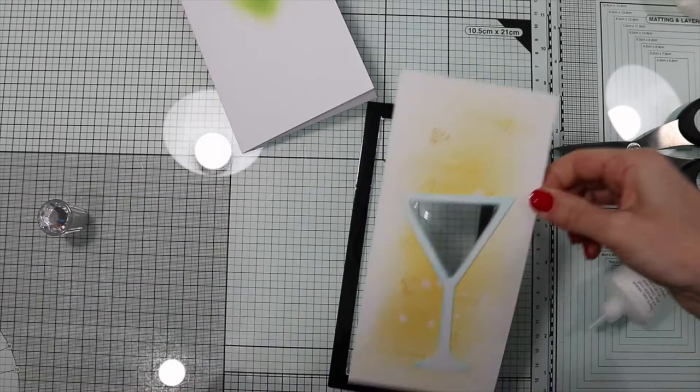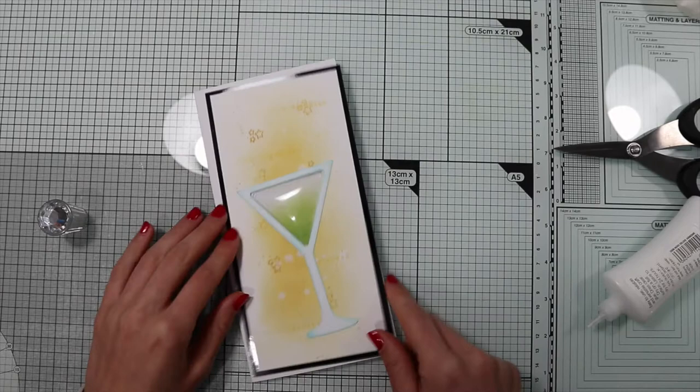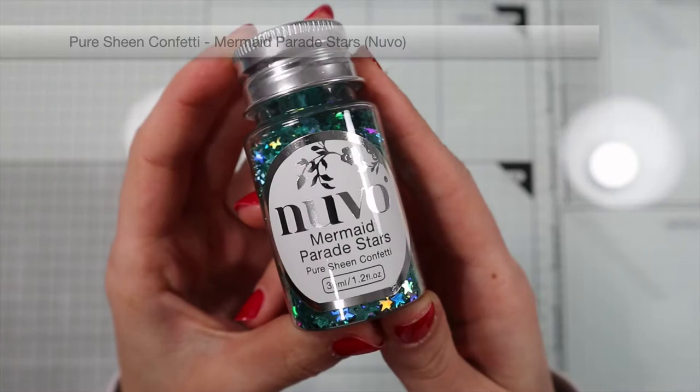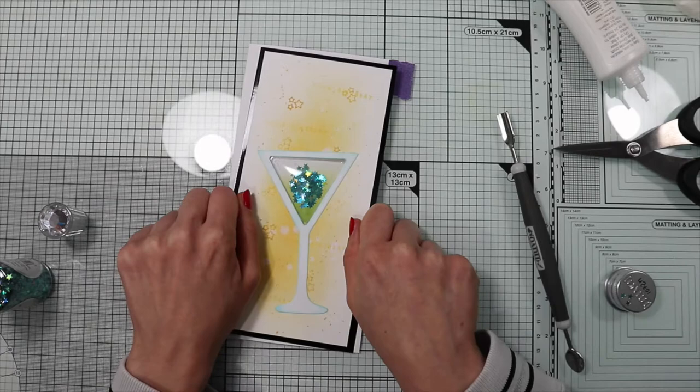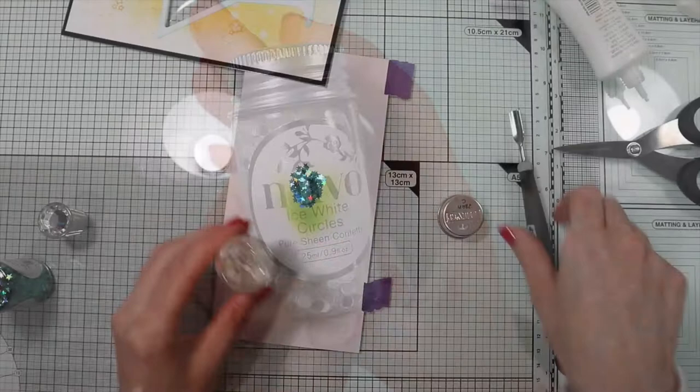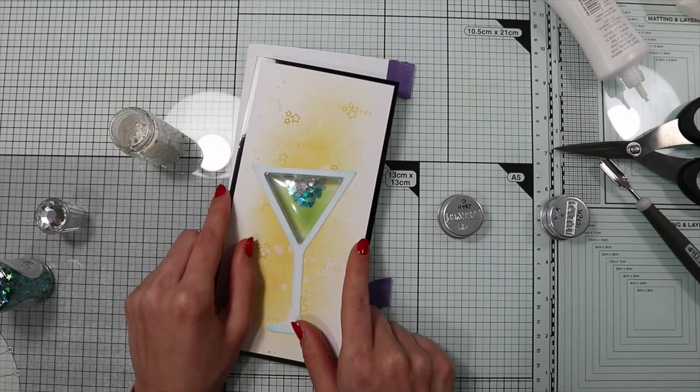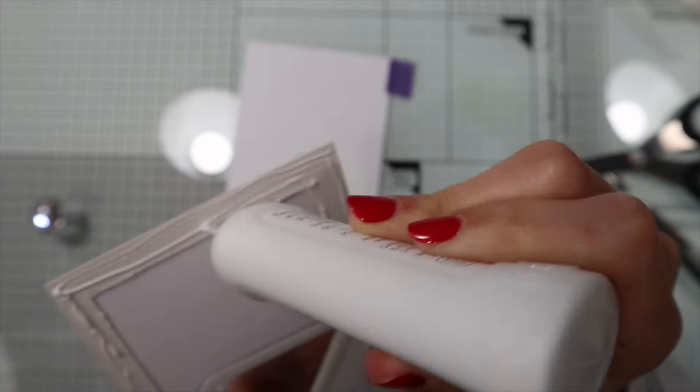And before gluing the main panel onto the card base, I need to insert the shaker element. I'm going to use these stars and these clear circles with the silver highlight. Now I can glue the main panel on top of my card base.